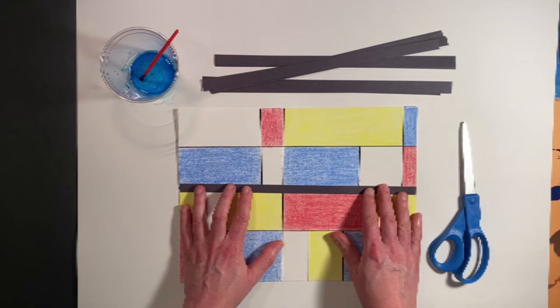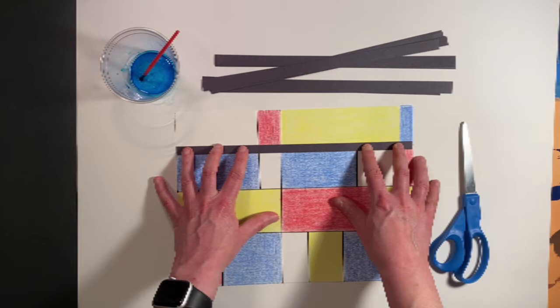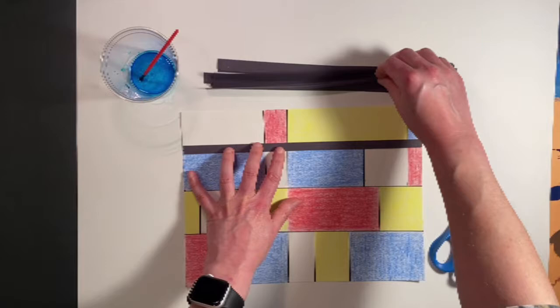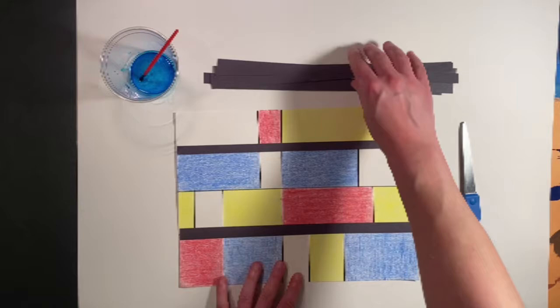So we can do that two ways. We can estimate how long we think we need the piece to be, or we can measure the strips by lining them up and marking them with a pencil and then cutting them to fit.